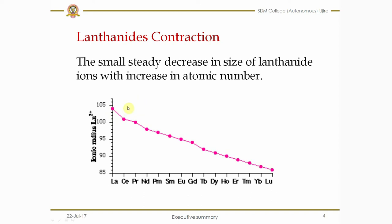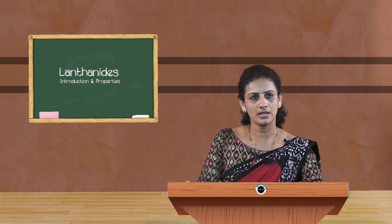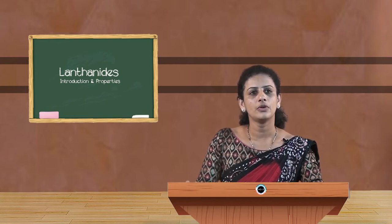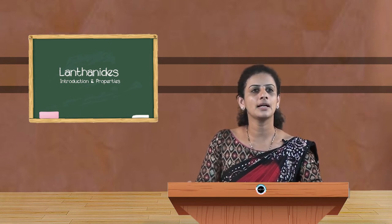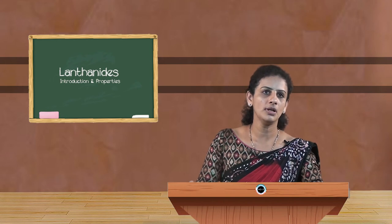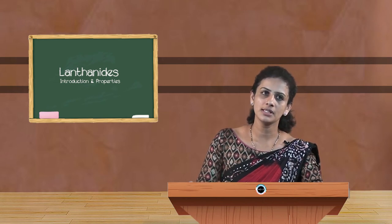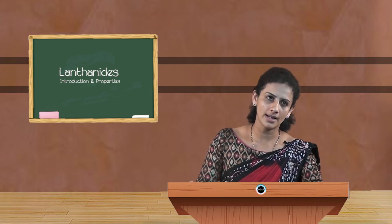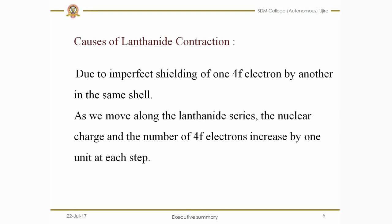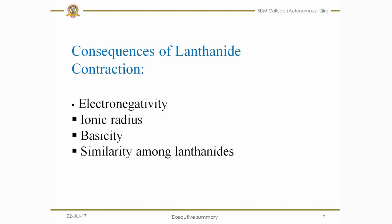We can represent lanthanide contraction by plotting a graph of ionic radii versus atomic number. From this graph we get a curve showing a very small decrease in size of lanthanide ions. For example, La³⁺, the first element of the lanthanide series, has an ionic radius of 105 pm, while the very next element Ce³⁺ has an ionic radius of 101 pm — showing a very small decrease in ionic size.